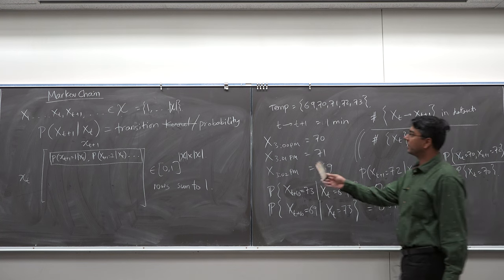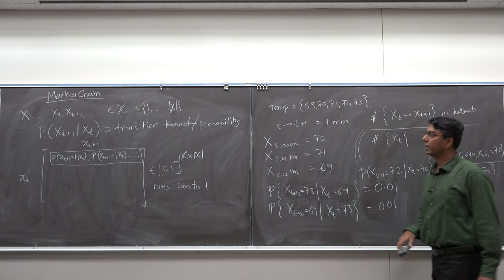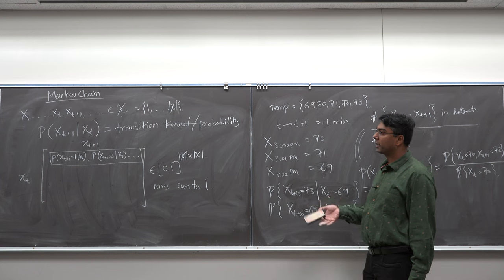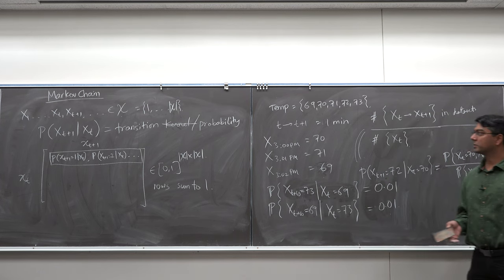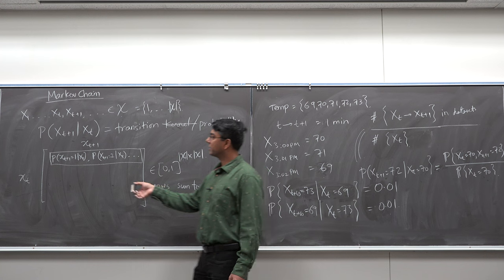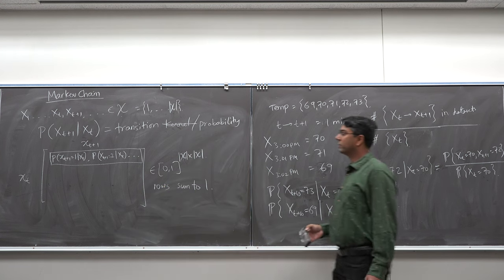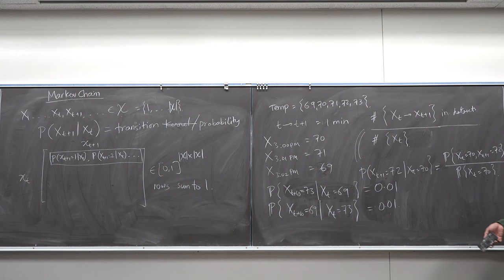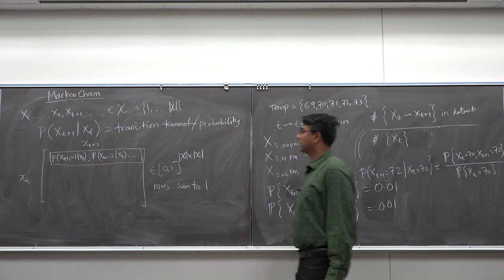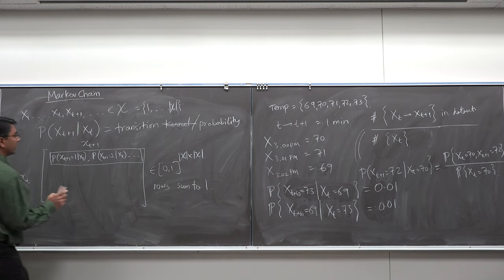The same idea applies to the velocity of a vehicle, the rotational speed of tire sensors, the temperature of the entire building, the position and velocity of a rocket, or the velocity of an autonomous vehicle. No matter which autonomous system you pick, you can record the state and come up with the transition kernel based on the physical model. If you do not have the physical model, you can still estimate it by counting the number of transitions divided by the number of times Xt occurred in the data.